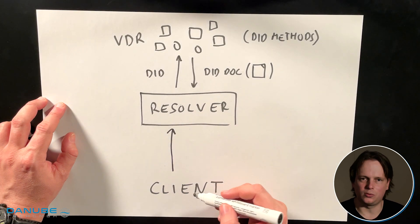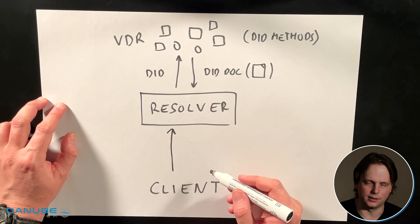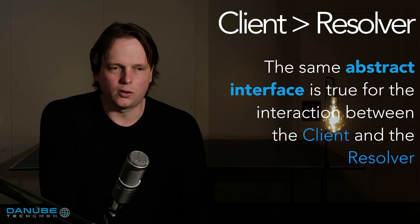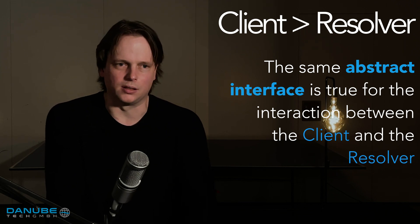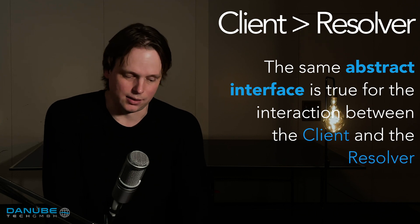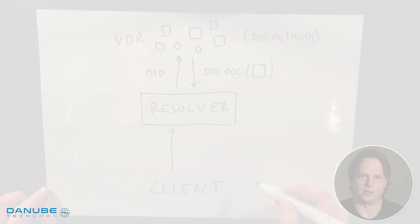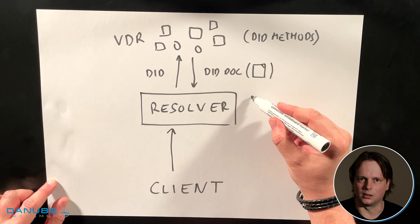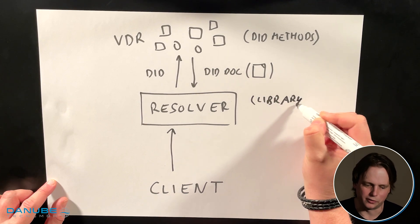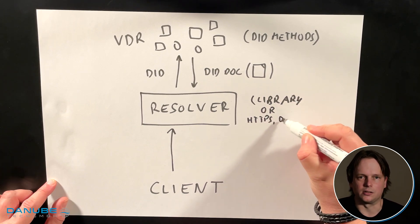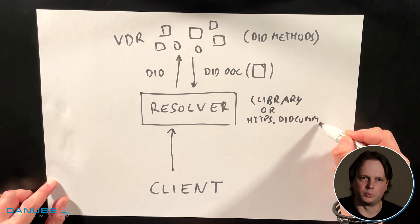Pretty much the same is true for the interaction between the client and the resolver. When the client invokes the resolver, there is not one concrete way how this has to be implemented. This is not a specific client-server protocol, as it is in DNS, for example. This is also an abstract interface. This could be a local process — just the client calling a local library included in the same piece of software. But this could also be a remote service. A client can also connect to a remote DID resolver over protocols such as HTTPS or DIDComm.